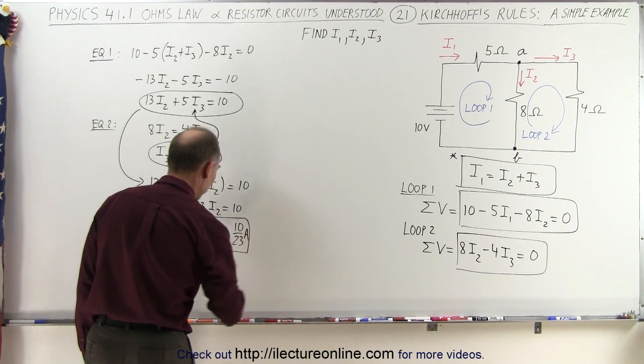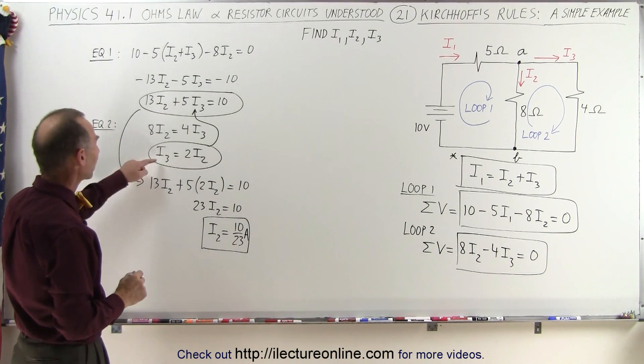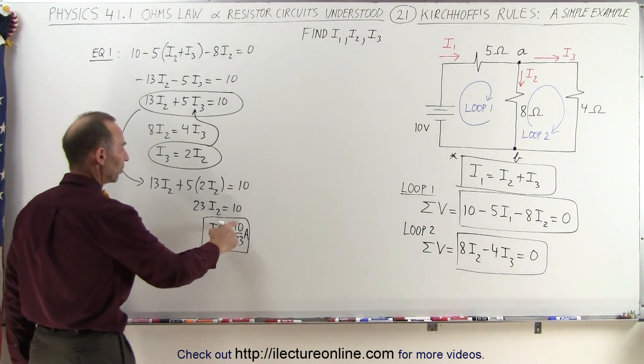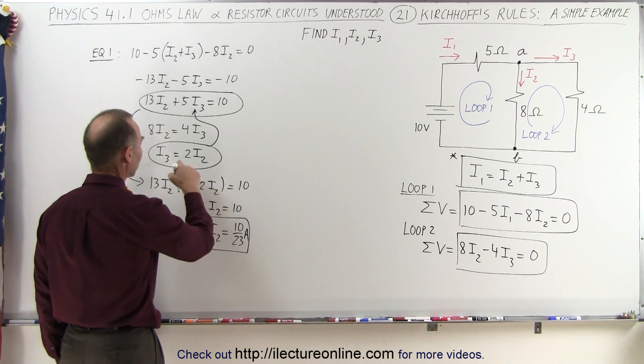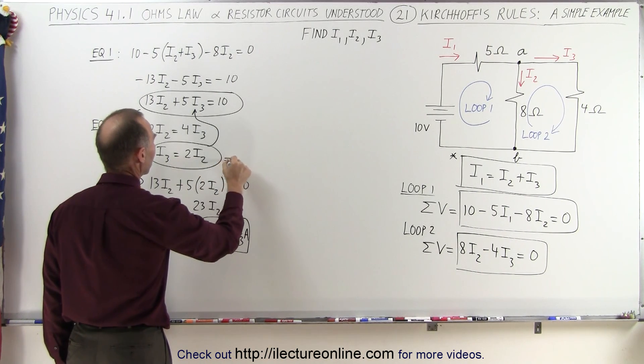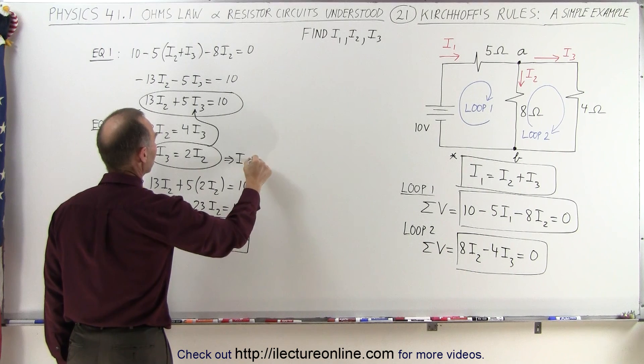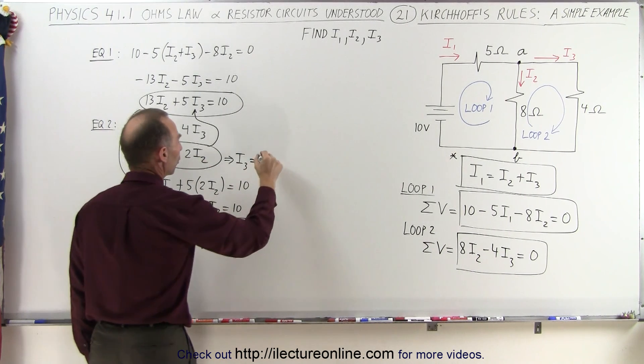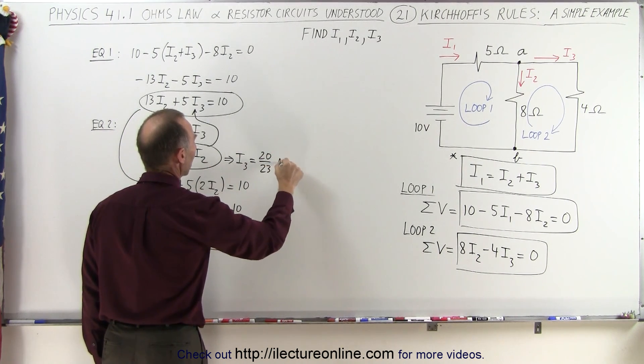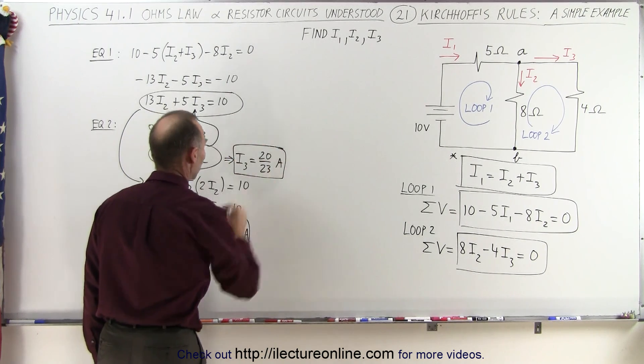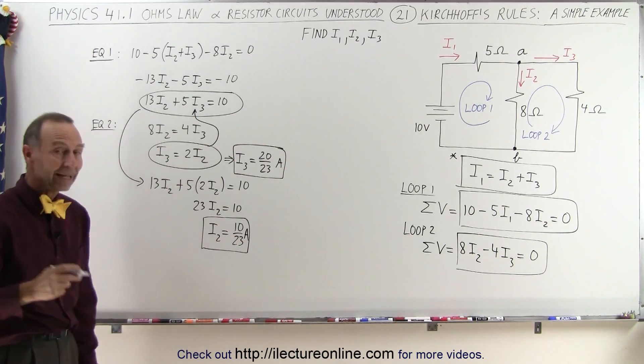So here I have my first current in terms of amps. Now I go back to I3, which is twice I2. So if I2 is equal to 10/23 amp, then twice that much, I can then say that I3 is equal to 2 times 10, or 20 over 23 amps.